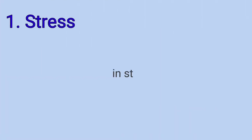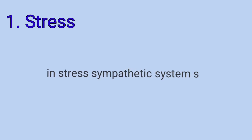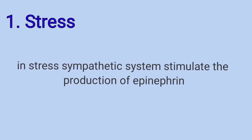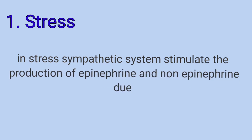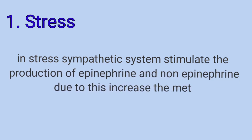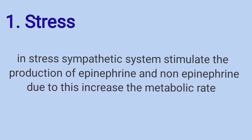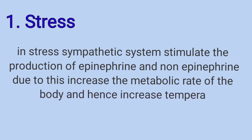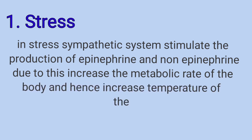The first one is stress. In stress, the sympathetic system stimulates the production of epinephrine and norepinephrine. Due to this, the metabolic rate of the body increases, and hence the temperature of the body increases.